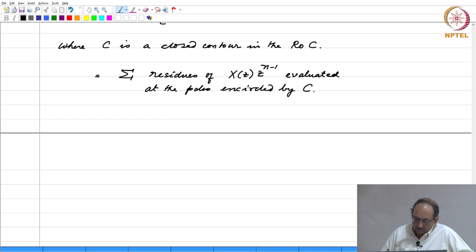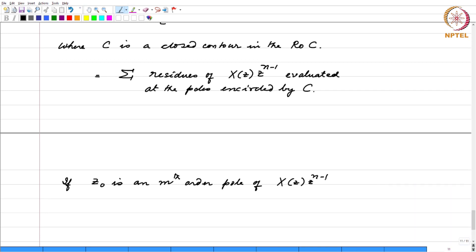And as a formula for this, if z naught is an mth order pole of X(z) times z to the n minus 1, the residue at z equal to z naught is given by this.